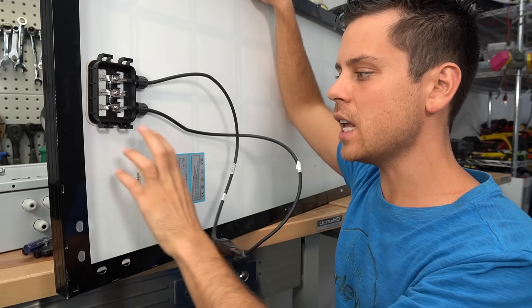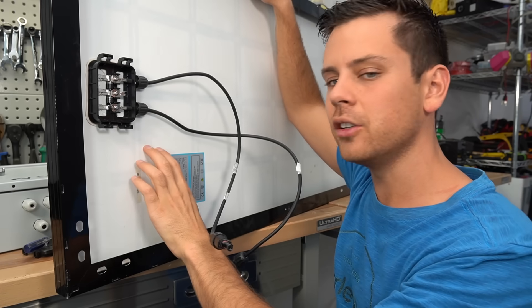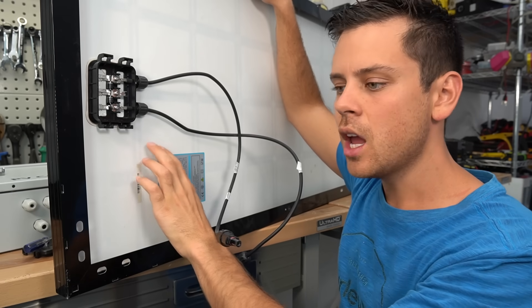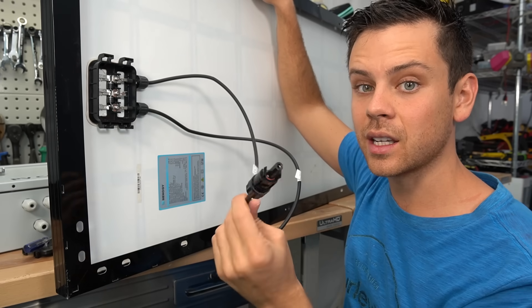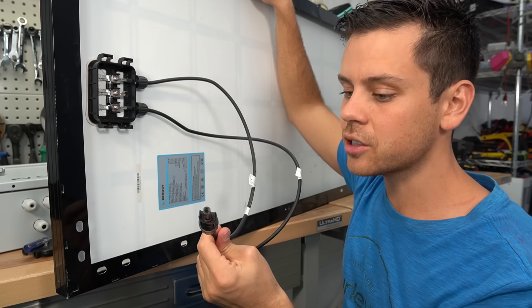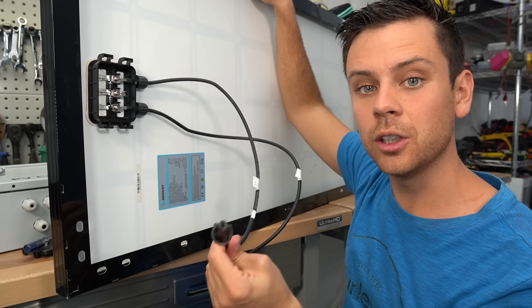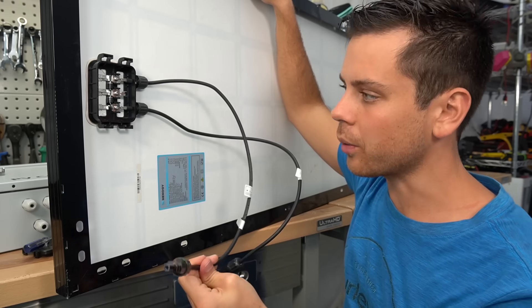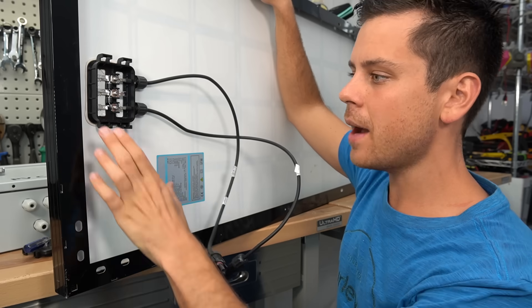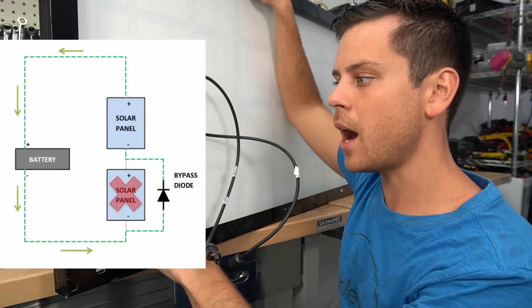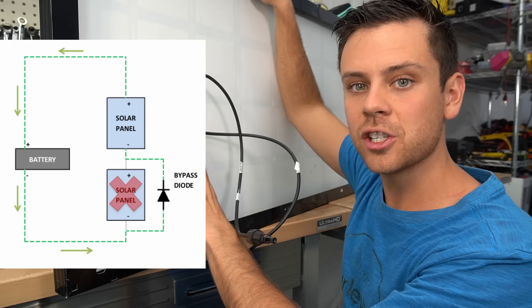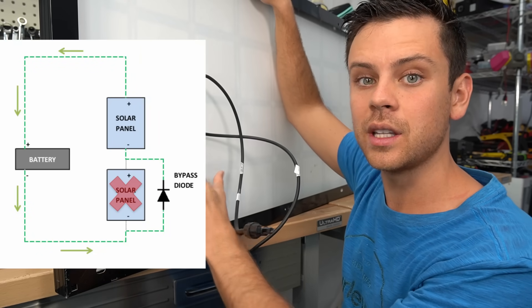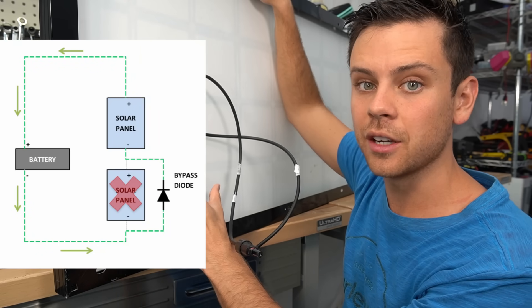Each diode is wired in parallel to each string. This will ensure that even if this panel is shaded, the rest of the panels that this is connected in series to will still produce power. The bypass diodes bypass this panel if it is shaded or if it's not producing enough current.